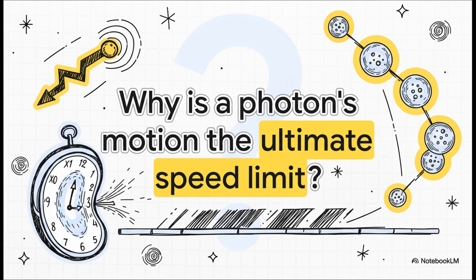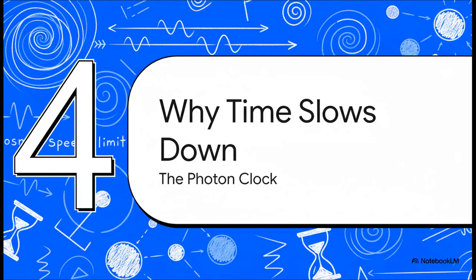But you know how it is in science, right? You crack one huge mystery, and another, even bigger one, is waiting right behind it. We've just explained why photons are massless. But why is their speed the absolute can't break speed limit for the entire universe? The answer to that question? This is where things get truly strange. It turns out that time itself isn't constant. It's flexible. And we can see why with a really cool thought experiment.